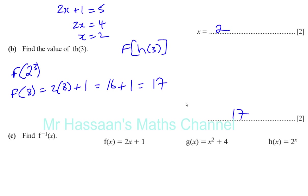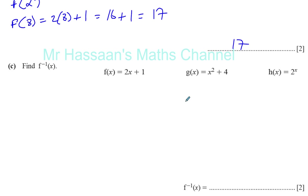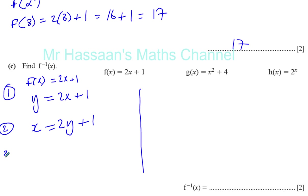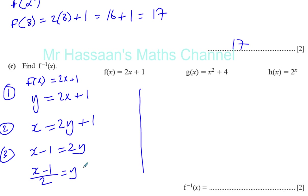Part c says find the inverse of function f. Function f is 2x plus 1. I'll show you the standard way first. You write y equals 2x plus 1, replacing f(x) with y. Second, you swap the x and y: wherever you see y, call it x, and wherever you see x, call it y. Then thirdly, you make y the subject of the formula. Subtract 1 from both sides: x minus 1 equals 2y. Divide both sides by 2, giving y equals x minus 1 over 2. So the inverse function of f(x) is x minus 1 over 2.